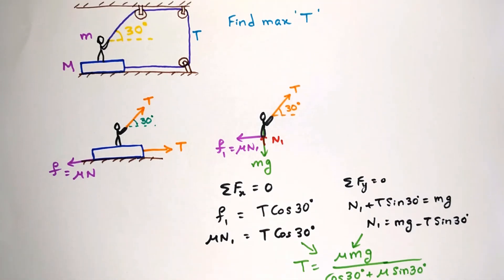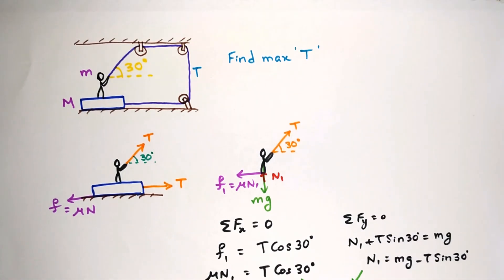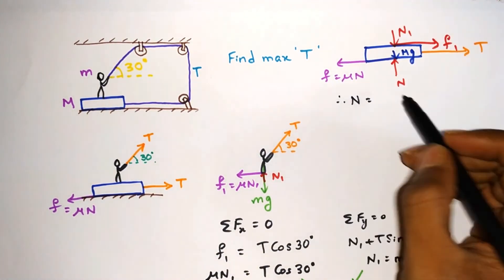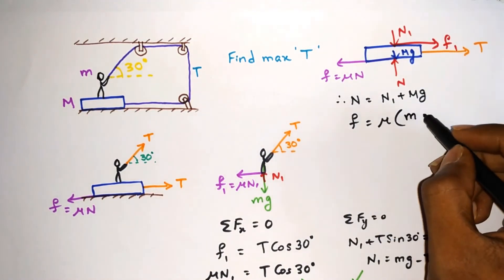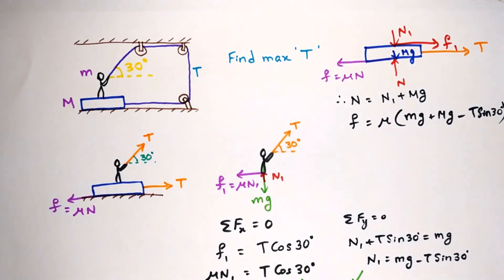We should also check the maximum tension at which the block will remain stationary. Mention all the forces acting on the block and take ΣFy = 0. We get N = N1 + Mg. Now multiply this equation by μ and substitute the value of N1 to get this equation.